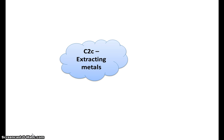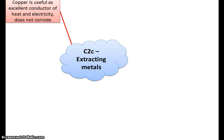This part of the topic is looking at how we can extract metals from what's known as an ore, O-R-E. We're going to be looking in particular at copper. Copper has some really good uses and, as you probably know, quite a lot of it — in fact 65% — is actually used in electrical items because it's such a good conductor of electricity. 25% is used in construction, 7% in transport, and then there are other uses as well.